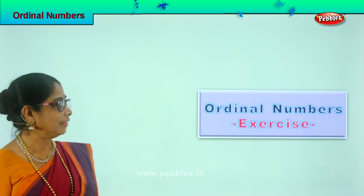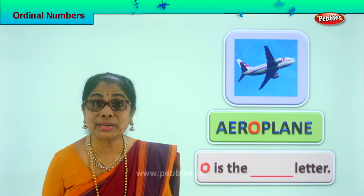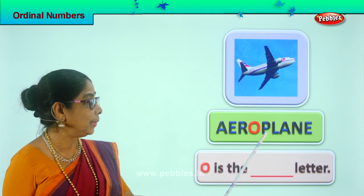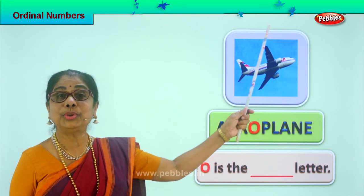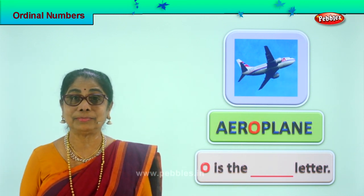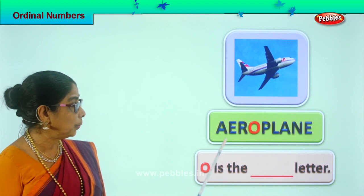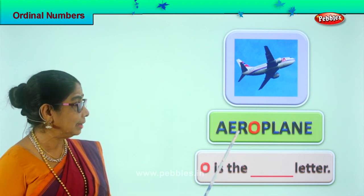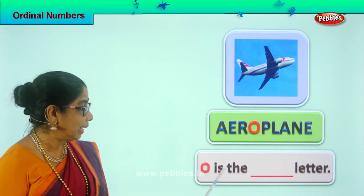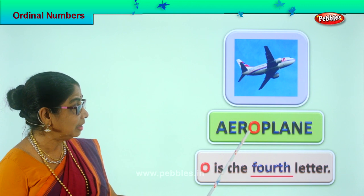Let's look at our first exercise. Look at the picture here — what picture is that? Airplane, very good. Spell airplane: A-E-R-O-P-L-A-N-E. Now you have the airplane here, and in the airplane one letter is colored. We are going to find out the ordinal position of letter O. First, second, third, fourth place — O is the fourth letter.